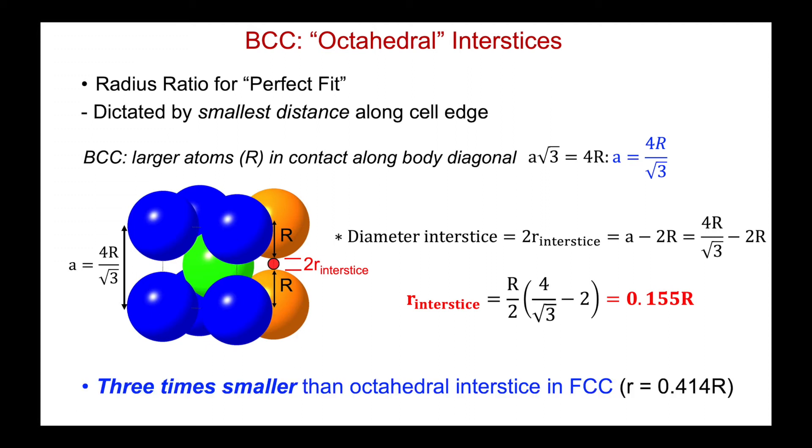So the radius ratio, 0.155, is three times smaller than an octahedral interstice in the FCC or HCP structure, where we know it's 0.414.